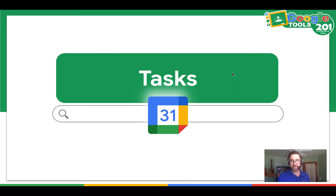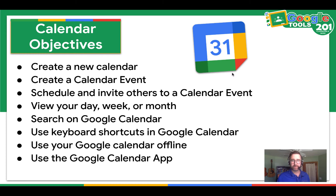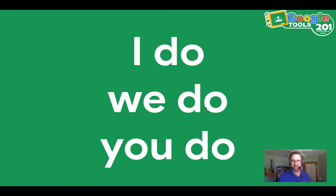So let's jump straight into the tasks. Today we're going to be creating a new Google Calendar. You're going to create a calendar event. You'll have a chance to schedule and invite others to a calendar event. You're going to look at the view in terms of day, week, and month. You'll also have a chance to search Google Calendar, use keywords or shortcuts in Google Calendar, and access it offline, and also check out the Google Calendar app on a mobile device. The way we'll do it in this video is I will read through some instructions, model how to do that, and then you will have a chance to pause the video and do it yourself.